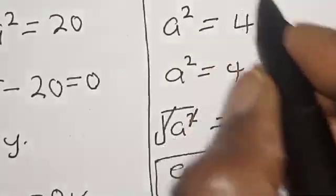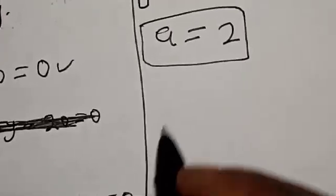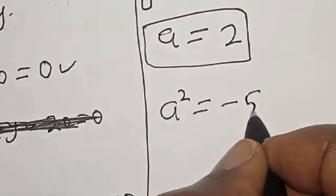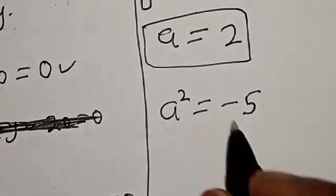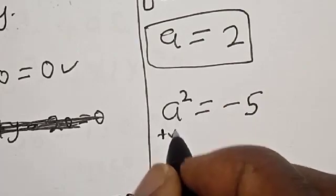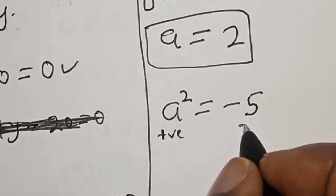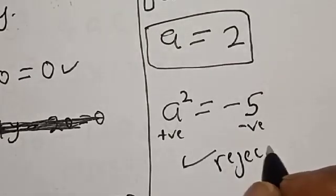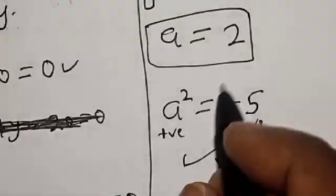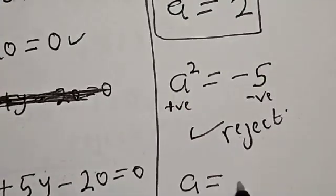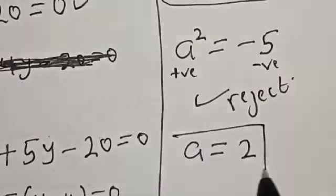For the second case, A square equals minus 5. But A square cannot be negative because A square is always positive. So we reject this case. The only solution we have is A is equal to 2. That is our final answer.